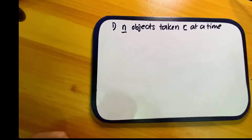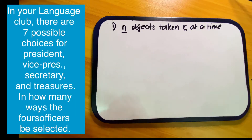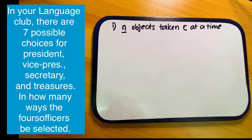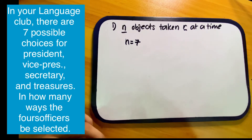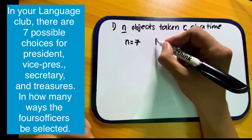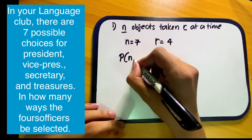We have the variable n and r — n objects taken r at a time. For example: in your language club there are seven possible choices for president, vice president, secretary, and treasurer. In how many ways can the four officers be selected? Analyzing the problem: there are seven possible choices, so n equals seven, and there are four officers, so r equals four.